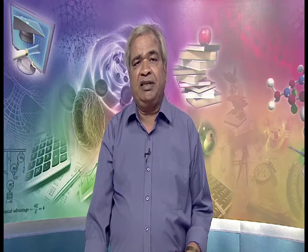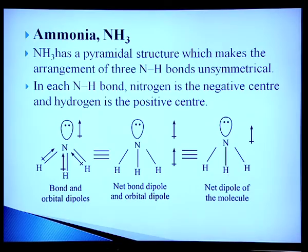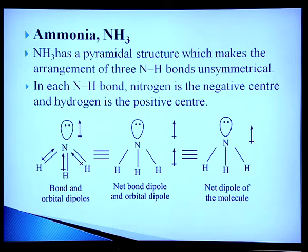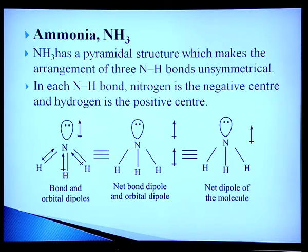Ammonia is a most interesting example. NH₃ has a pyramidal structure, which makes the arrangement of the three N–H bonds unsymmetrical. In each N–H bond, nitrogen is the negative center and hydrogen is the positive center. Since ammonia has one lone pair of electrons, the lone pair dipole is in the opposite direction to the bond dipoles. However, since there are three hydrogens and the structure is unsymmetrical, net ammonia does show a dipole moment.